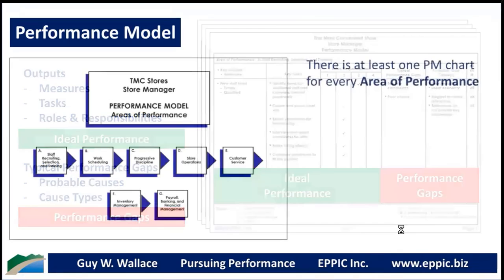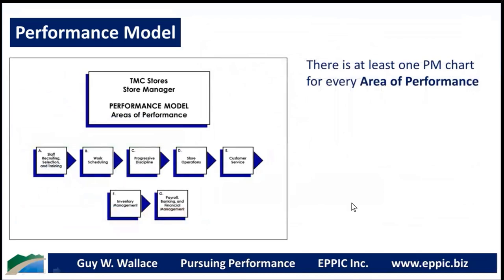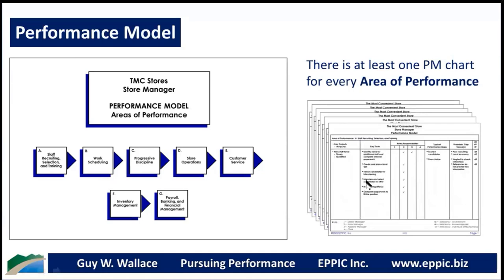That's some of the data we use. Here's an example from the 1980s when gas stations started putting convenience stores in — that was my project with my client. This shows how they broke the job down into what I call 'areas of performance' — could have been called accomplishments, major duties, or key results areas, but I call it areas of performance to avoid the nuanced meanings of those other labels. There's at least one performance model chart for every area of performance.